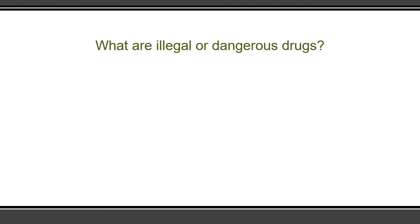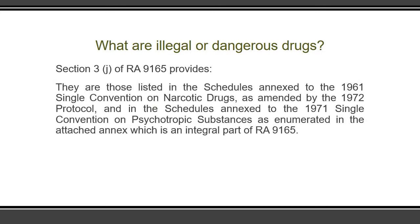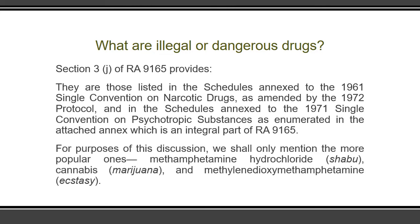Before we discuss the crimes of selling, possession, or use of illegal or dangerous drugs, we must first ascertain what are these illegal or dangerous drugs. The answer can be found in Section 3J of Republic Act 9165, which provides that dangerous drugs are those listed in the schedules annexed to the 1961 Single Convention on Narcotic Drugs as amended by the 1972 Protocol, and in the schedules annexed to the 1971 Single Convention on Psychotropic Substances as enumerated in the attached annex, which is an integral part of Republic Act 9165. For purposes of this discussion, however, we shall only mention the more popular ones.